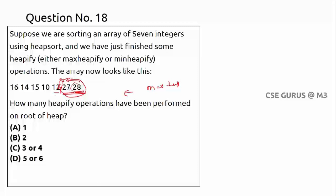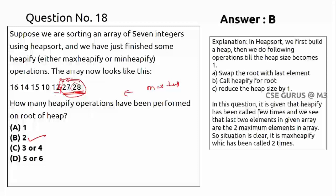The answer is option B. Two operations are performed. The heap sort process: swap the root with the last element, then call heapify. Initially the root is 28, it swaps to the last position, then 27 becomes the next highest, and so on. This is how we identify how many heapify operations have been performed.